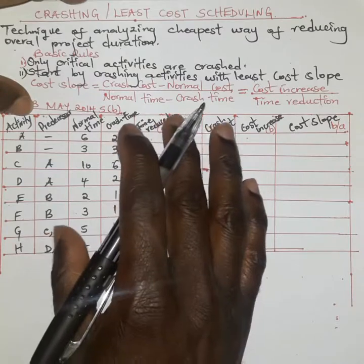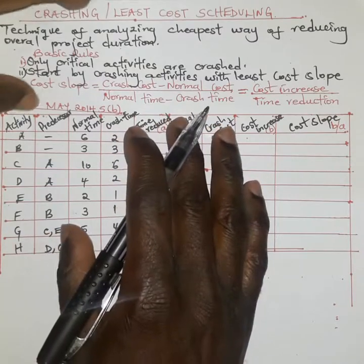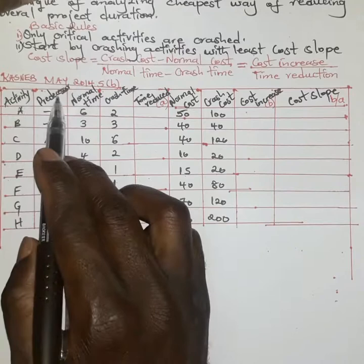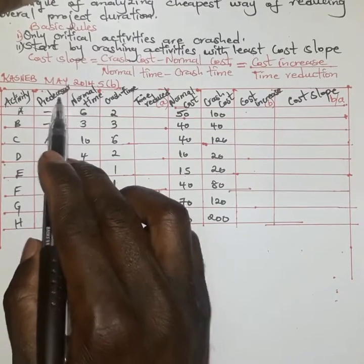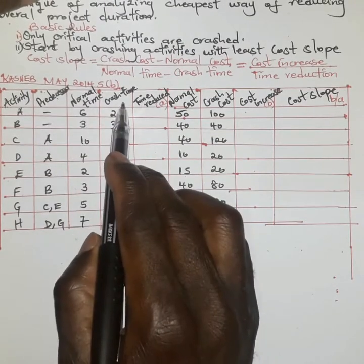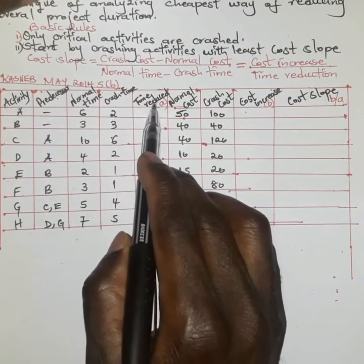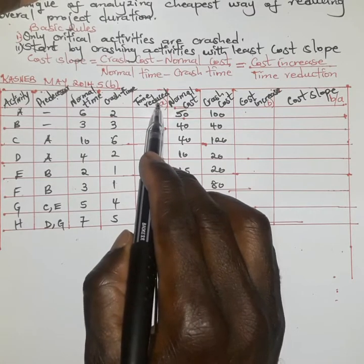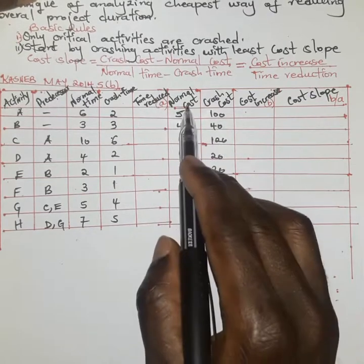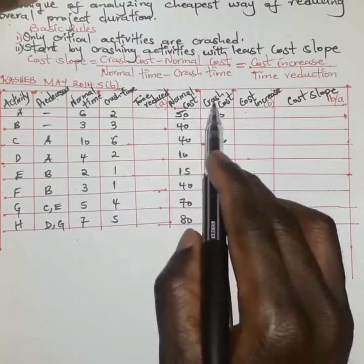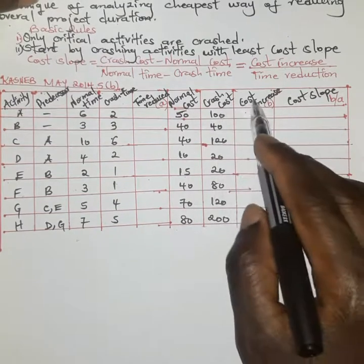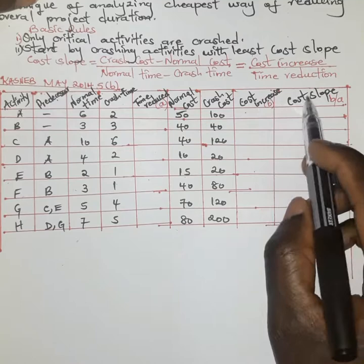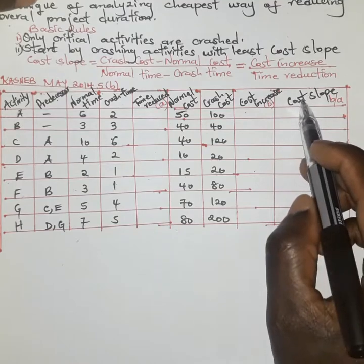I've copied the question from the paper, which shows activities, their predecessors, normal time, and crash time — which gives us the time reduction. We also have the normal cost and crash cost, which gives us the cost increase, and from those we calculate the cost slope.